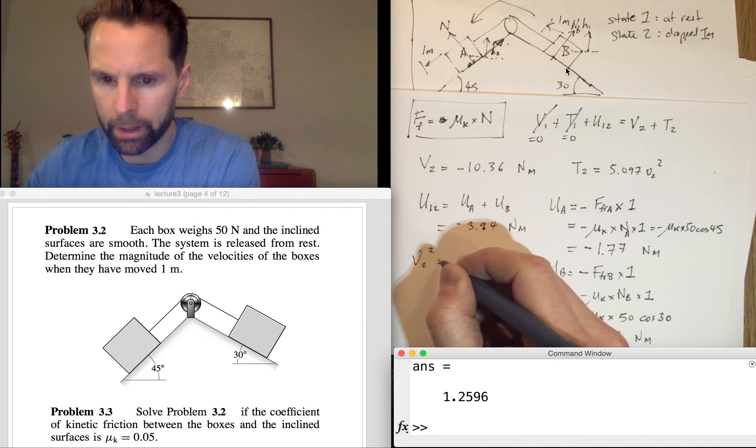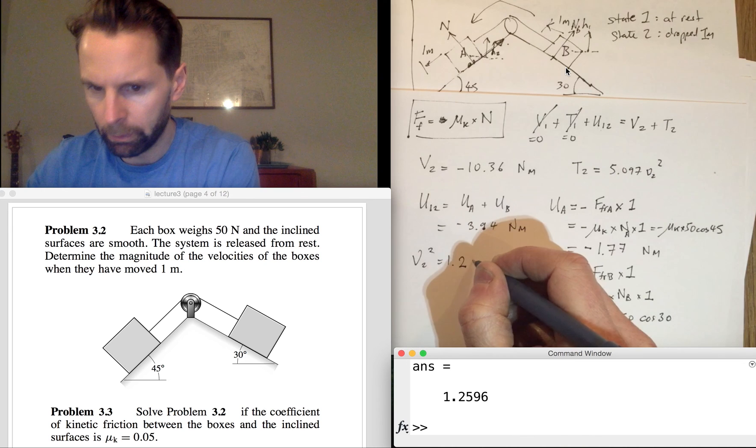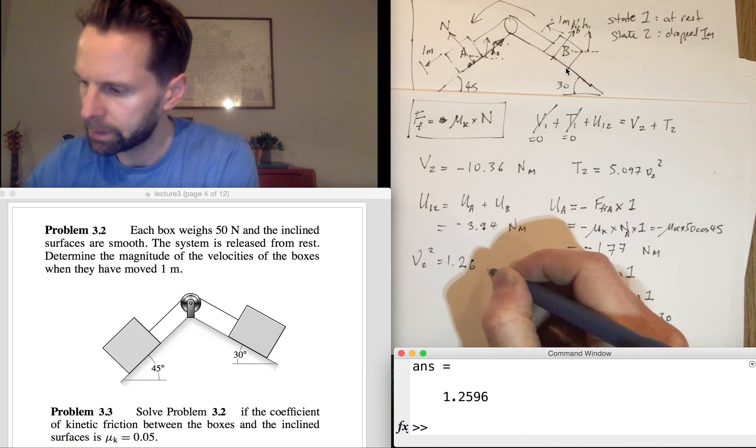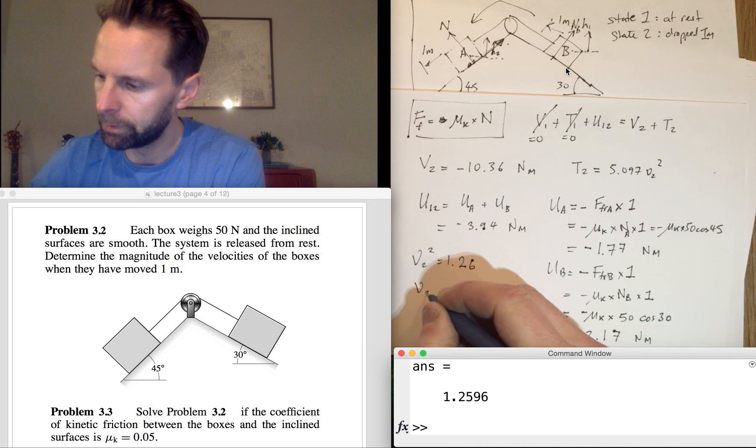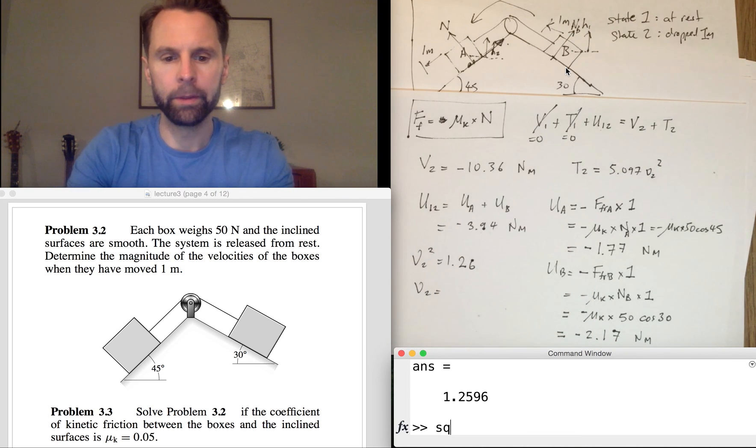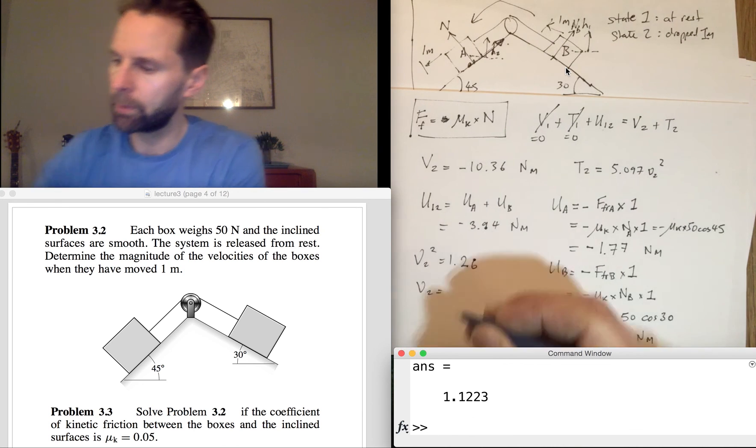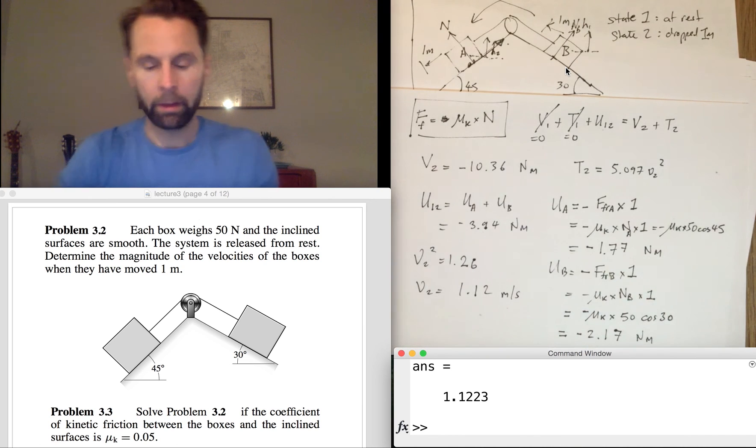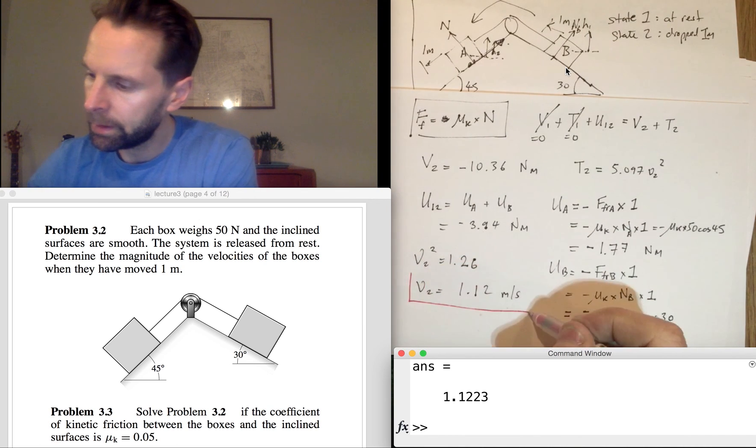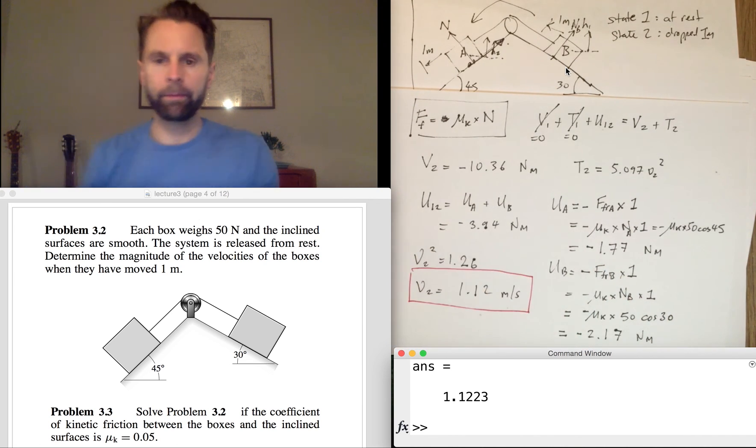This will give us V2 squared equals 1.26, so that means V2 is the square root of that, equals 1.12 meters per second. And that's the answer.